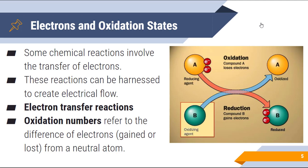The oxidation number refers to the difference of electrons gained or lost from a neutral atom. We've seen this particularly when we look at ionic compounds — we've talked about charges. The first group is a plus one charge, meaning it has lost an electron; group two is a plus two charge, meaning it's lost two electrons from the neutral state. Interestingly, this can occur in both ionic and covalent bonding, so it's important for us to be able to determine this information.